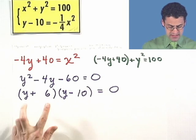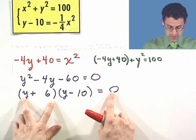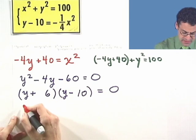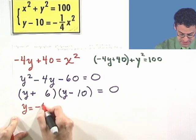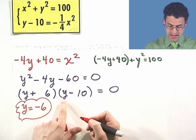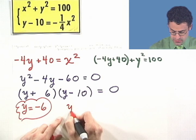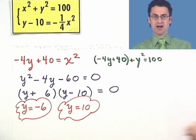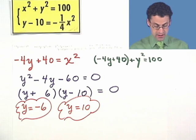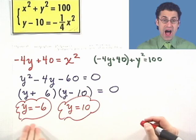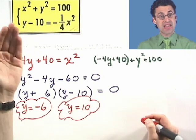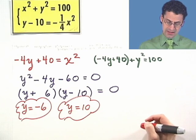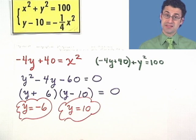Therefore there are two possibilities: either y plus 6 equals 0, giving y equals negative 6, or y minus 10 equals 0, giving y equals 10. So I have two y-solutions. But we're not done — these are ordered pairs, so I still need to find the corresponding x values for each y value.